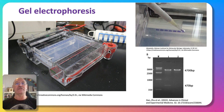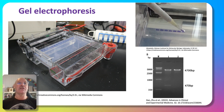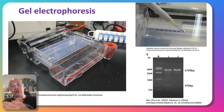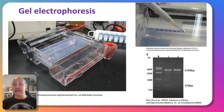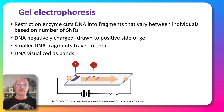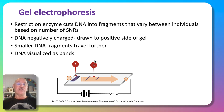DNA has a negative charge, so when the current is passed through the gel it drags the DNA towards the positive terminal. The smaller the DNA fragments, the further they travel through the agarose gel because they move faster. This separates the segments of DNA based on size, producing visible bands that we can use for comparison. To summarise: a restriction enzyme cuts DNA into fragments that vary between individuals based on the number of SNRs; DNA is negatively charged and drawn to the positive side; smaller fragments travel further, allowing us to visualise the DNA as bands.